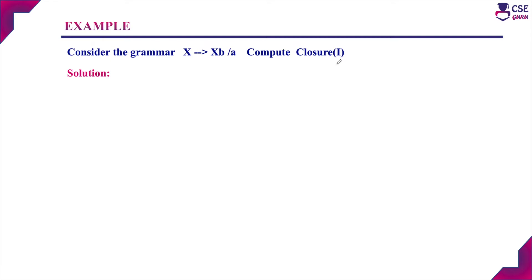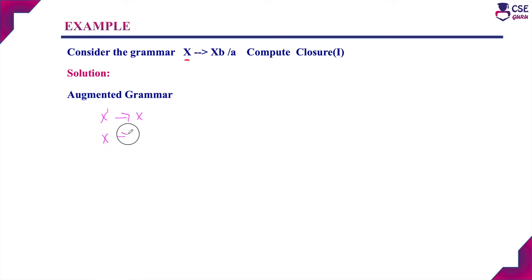The first step in all LR parsers is to add an augmented grammar for the given grammar. The augmented grammar adds a new production using the start symbol. Here the start symbol is X, so we add the new production X' derives X. The augmented grammar is: X' derives X, and X derives XB or E.